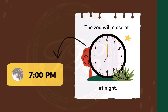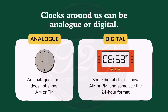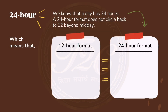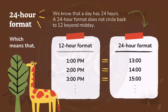Moving ahead, there will be two types of clocks: analog and digital. Analog doesn't show a.m. and p.m., whereas digital shows as per how we arrange it. A 24-hour format does not circle back to 12 beyond midday.